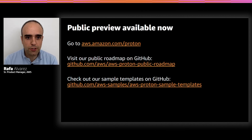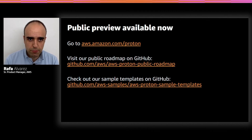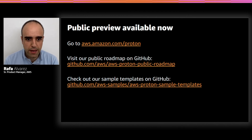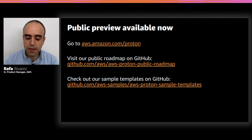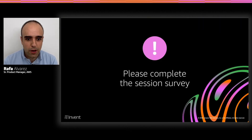AWS.amazon.com/Proton is the URL to access the public preview and start playing with the product. We have a public roadmap on GitHub at github.com/aws/aws-proton-public-roadmap — please go there to see what we're working on, tell us how you want things done, give us ideas, and suggest new features. We also have a public repository of sample templates that anyone can use. Thank you very much for your time and enjoy the rest of reInvent — and please take a moment to fill out the session survey below.